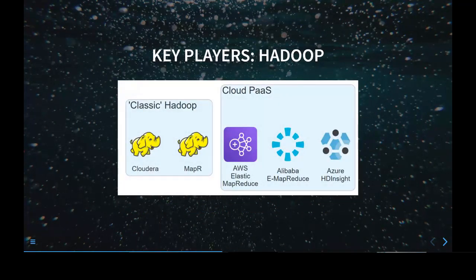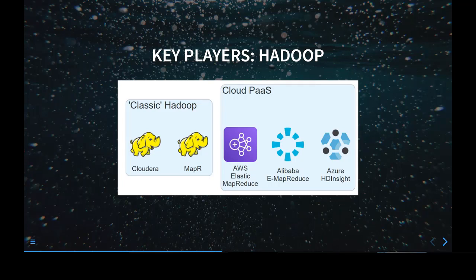Key players in the world of on-premises Hadoop: there are two — Cloudera and MapR. Cloudera is mostly moving toward having customers use their platform. MapR at one point looked like they might go under, but they have survived, and it's good to have that competition. In the cloud world, three separate clouds: Amazon with Elastic MapReduce, Azure with HDInsight, and Alibaba with eMapReduce — all three give you somewhere between IaaS and PaaS Hadoop.